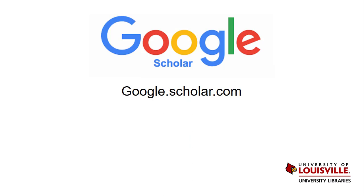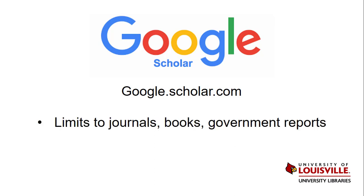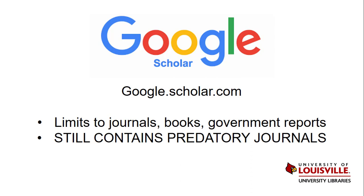One caveat regarding Google: there is a product called Google Scholar that can be useful only when you're really, really stuck. It's the same as Google, but it just filters out everything that isn't a journal article, a book, or a government report, like Morbidity and Mortality Weekly reports from the CDC. But it is not indexed or vetted, and it will not filter out any predatory journals or poor research. So use it at your own risk. I'd always search CINAHL and PubMed first, and if I'm not getting anything, give Google Scholar a try to see if you can get any leads.